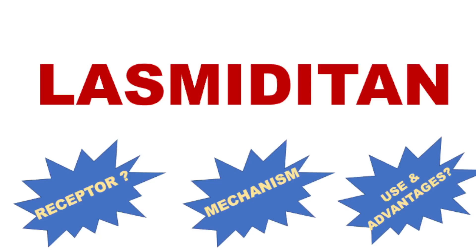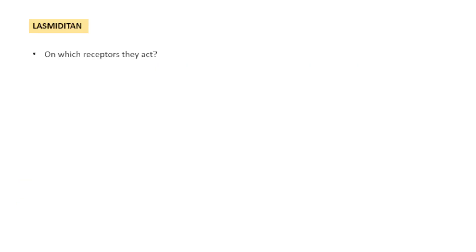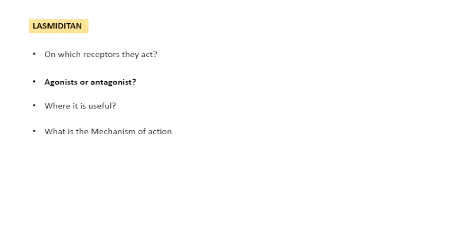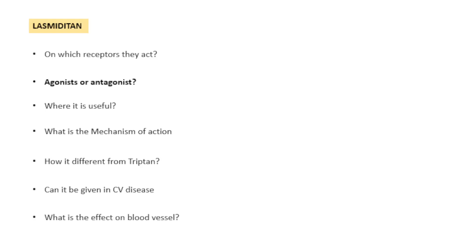Welcome to I Love Pharmacology. In this session, let us understand the very important drug that is lasmiditan. At the end of the session, you should be able to tell on which receptor lasmiditan acts, whether it is an agonist or antagonist, where it is useful, what is the mechanism of action, how it is different from triptans, can it be given in cardiovascular disease patients, and what is the effect on blood vessels.